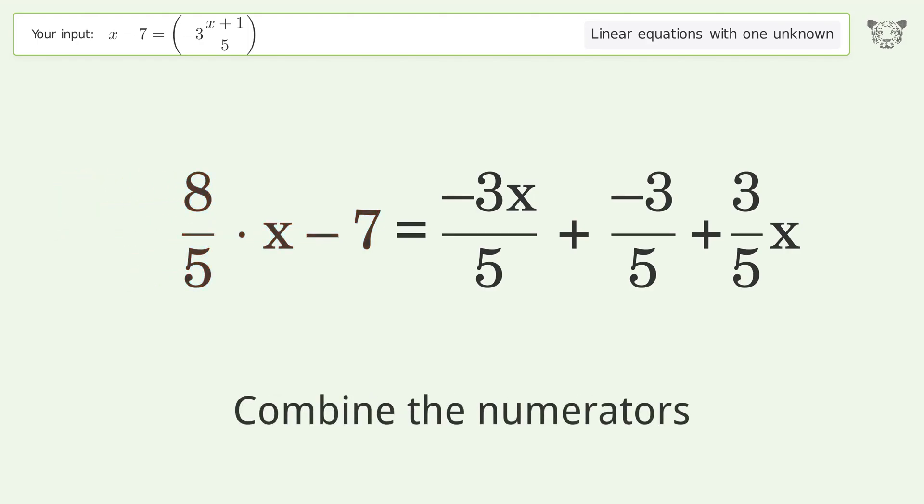Isolate the x. Multiply both sides by inverse fraction 5 over 8.